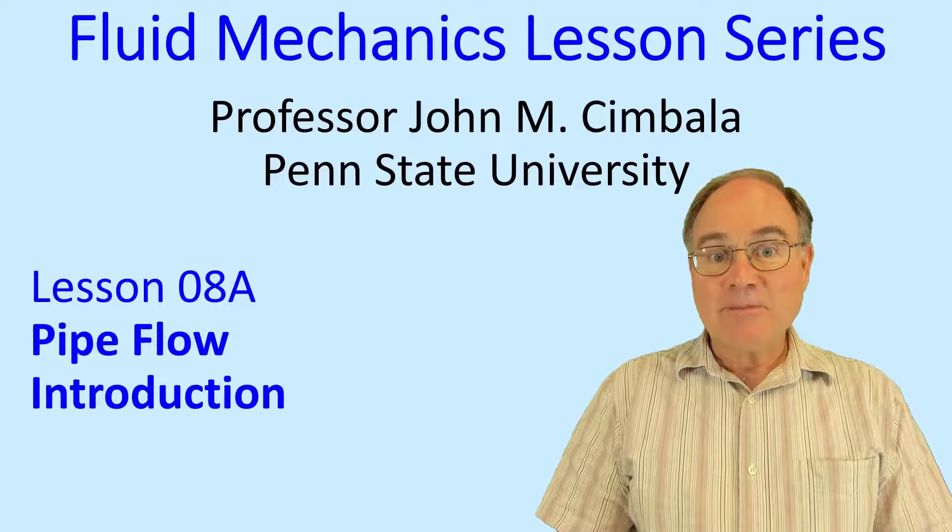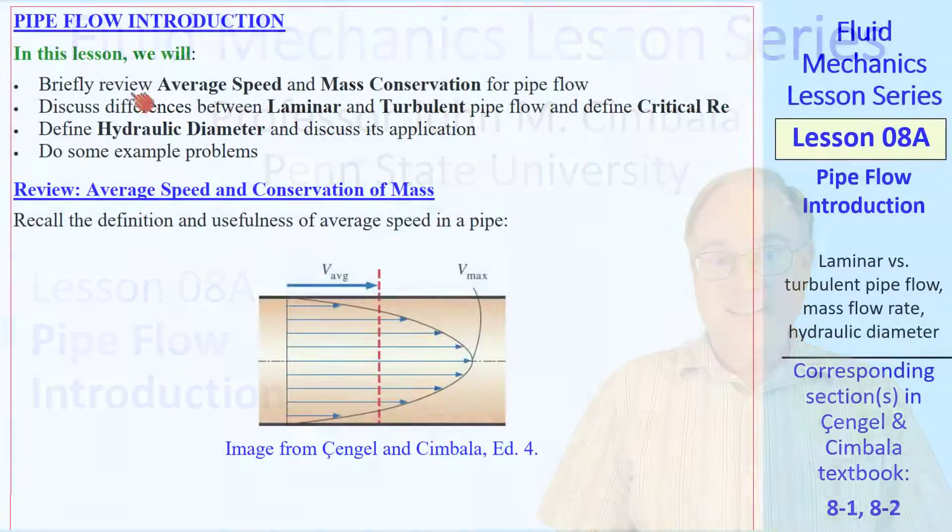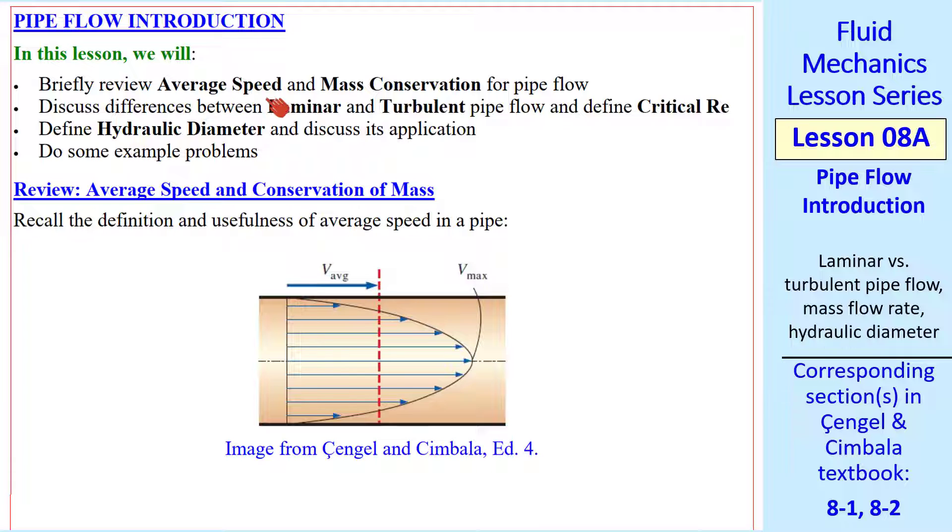Welcome to lesson 8a, Pipe Flow Introduction. In this lesson we'll do a quick review of average speed and mass conservation for pipe flow. We'll look at the differences between laminar and turbulent pipe flow and define something called a critical Reynolds number. We'll define hydraulic diameter and discuss its application, and we'll do some example problems along the way.